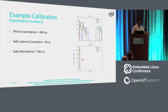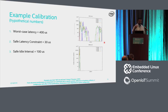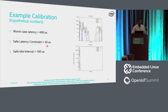Good results means the consistent latency behavior seen in the bottom graph. In this example, the worst case maximum was found to be 400 microseconds on a given platform and kernel configuration. Using the latency constraint method, a 30-microsecond constraint was found to filter out the problematic C-states. An idle interval of 100 microseconds also gives similar results.